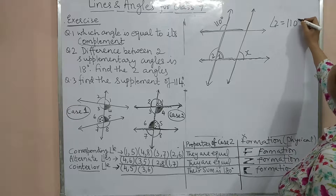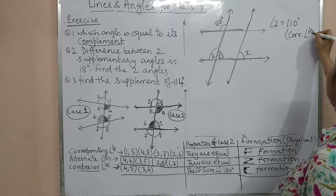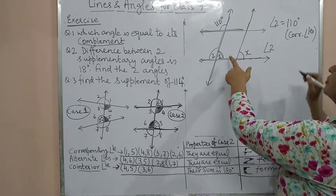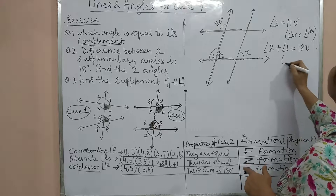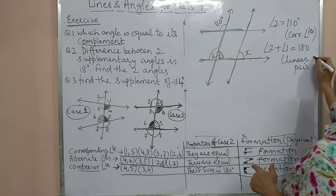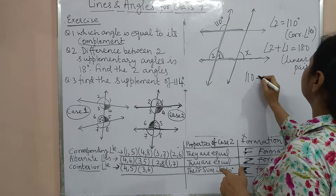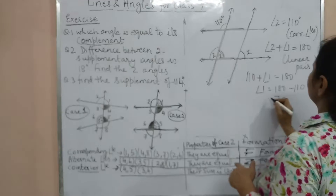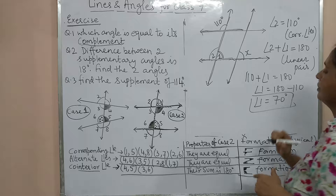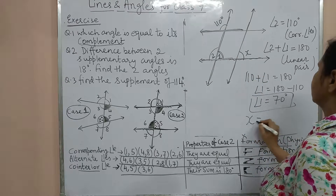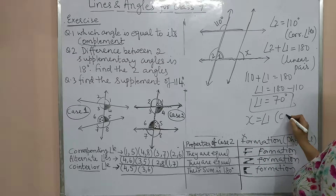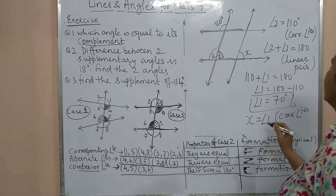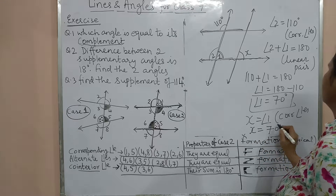Write it systematically: angle 2 = 110 degrees (corresponding angles, first pair of parallel lines). Then angle 1 + angle 2 = 180 (linear pair), giving angle 1 = 70 degrees. Since X corresponds to angle 1 by the second pair of parallel lines cut by the transversal, X = 70 degrees.